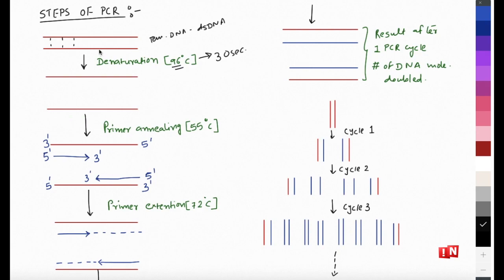This high temperature is applied for about 30 seconds - not more than that - because we don't want to denature the phosphodiester bonds or damage the DNA. For a brief time you expose the DNA to 96 degrees centigrade so the hydrogen bonds are broken and the two strands are separated. This first step - separating the DNA - is called denaturation, because you are breaking the hydrogen bonds with high temperature.